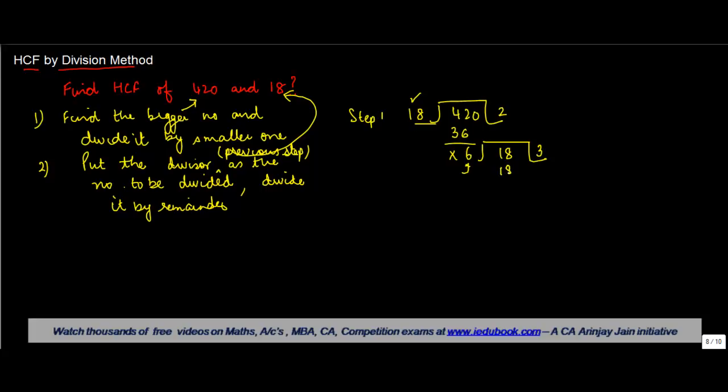The last divisor which is 6 in your case is the HCF or the highest common factor. Now, what can also happen is that, you know, it might just be that at the end of step 2,